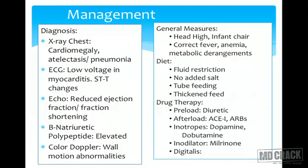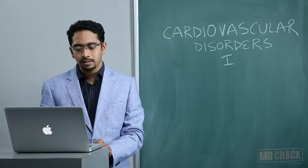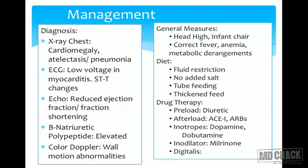Diagnosis is confirmed by demonstrating cardiomegaly; there may be associated pneumonia or atelectasis due to compression over the bronchus from increased cardiac size. ECG in cases of myocarditis shows low voltage complexes and associated ST-T wave changes. Echocardiography shows reduced ejection fraction and fractional shortening — fractional shortening is an entity specific to the pediatric age group. BNP levels will often be elevated, and color Doppler of ventricular walls shows wall motion abnormalities.